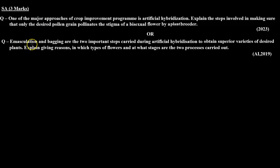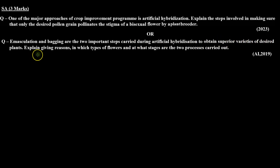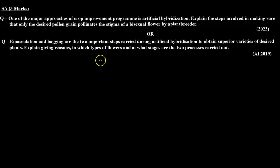The next type is: emasculation and bagging are the two important steps carried out during artificial hybridization to obtain superior varieties of desired plants. Explain, giving reasons, in which type of flowers and at what stages the two processes are carried out.